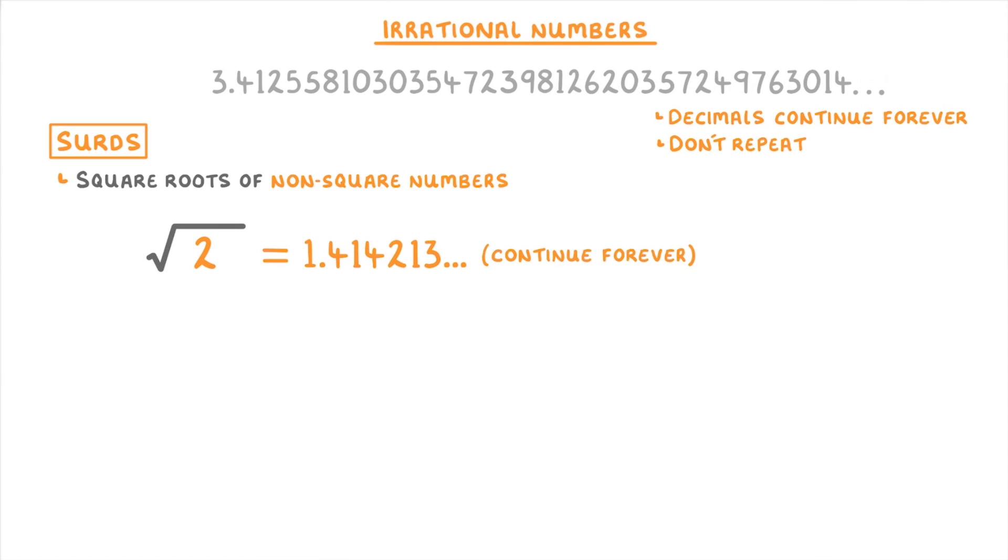In contrast, if we square root a number like 9, then that doesn't count as a surd because 9 is a square number and we can simplify square root 9 to 3.